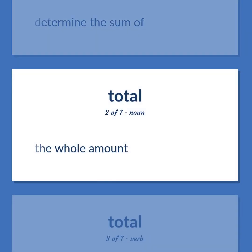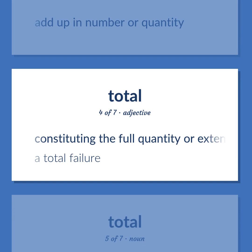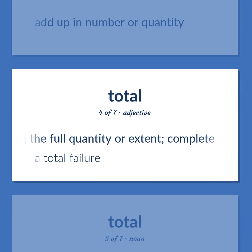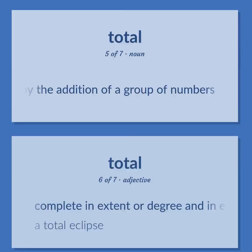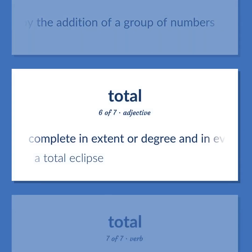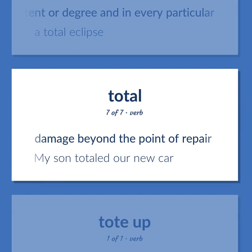Total: The whole amount. Add up in number or quantity. Constituting the full quantity or extent; complete — a total failure. A quantity obtained by the addition of a group of numbers. Complete in extent or degree and in every particular — a total eclipse. Damage beyond the point of repair — my son totaled our new car.